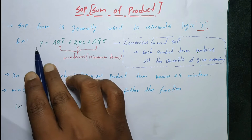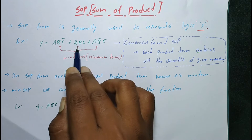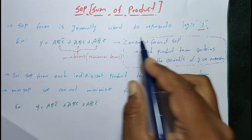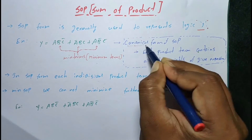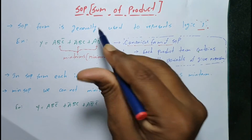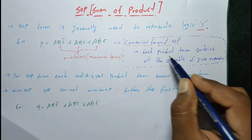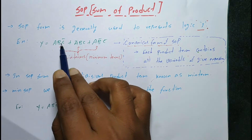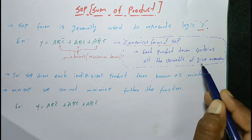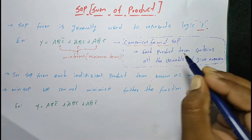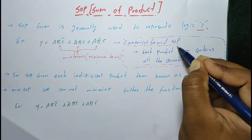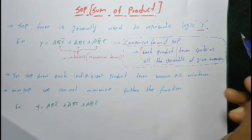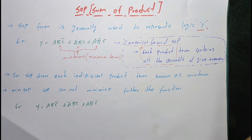For example, y equals to ABC̄ plus ĀBC plus ABāC̄. This is the canonical form of SOP. In the canonical form, each product term contains all the variables — A, B, C — that is, all the variables of the given expression.